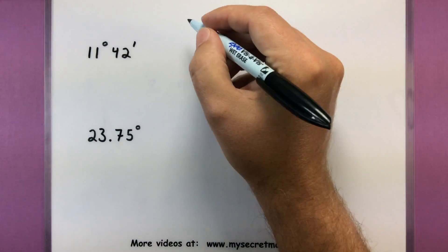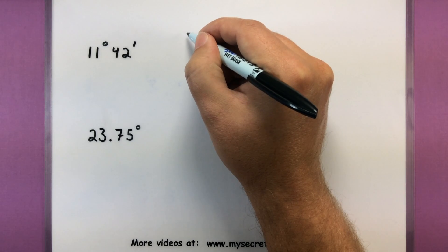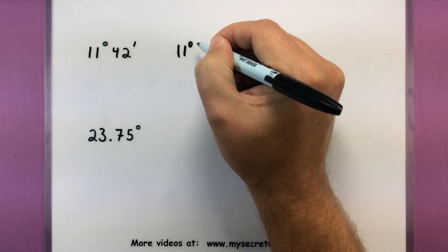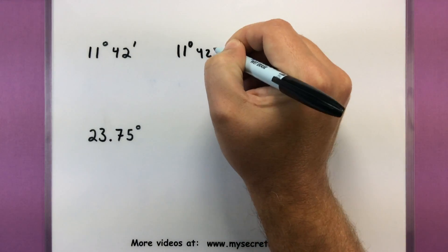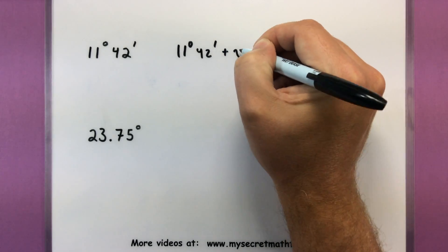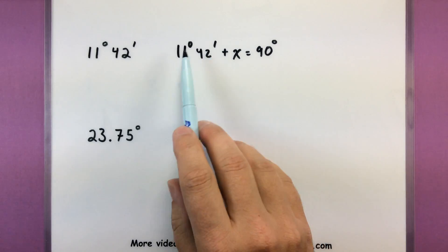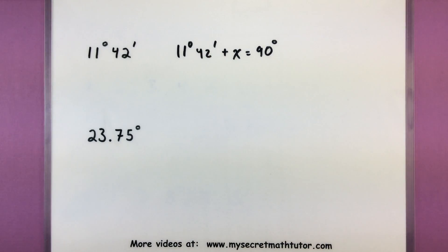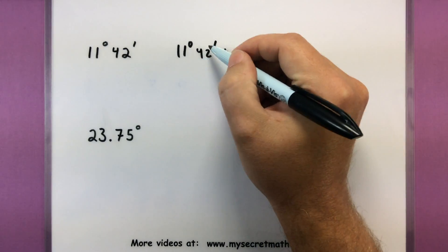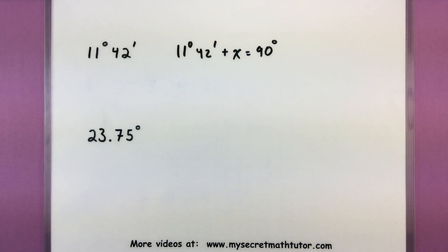So for an angle like this we're still doing the same thing. If I want to find the complement then I want to figure out what do I need to add to this in order to get that 90 degrees. So plus mystery angle equals 90. Now with degrees, minutes, and seconds you want to think of the minutes part as little pieces of a full degree. And as soon as this hits 60 then you get a full degree.